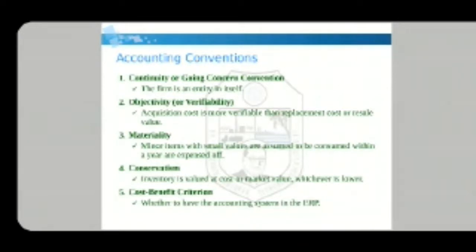The next convention is conservatism: inventory is valued at cost or market value, whichever is lower. When valuing inventory, we compare the actual cost and the market cost, and take whichever is lower. Next is the cost-benefit criteria — whether to have the accounting system in an ERP depends on cost-benefit criteria; the type of accounting system to use depends on both values.